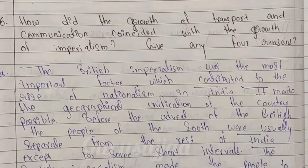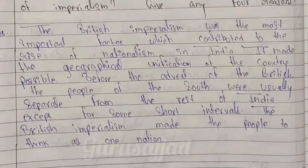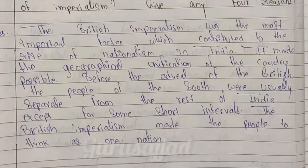How did the growth of transport and communication connect with the growth of imperialism? British imperialism was an important factor that contributed to the rise of nationalism in India. It made the geographical unification of the country possible. Before the British, the people of the south were usually separated from the rest of India. British imperialism made people think as one nation, and therefore communication and transport expanded.